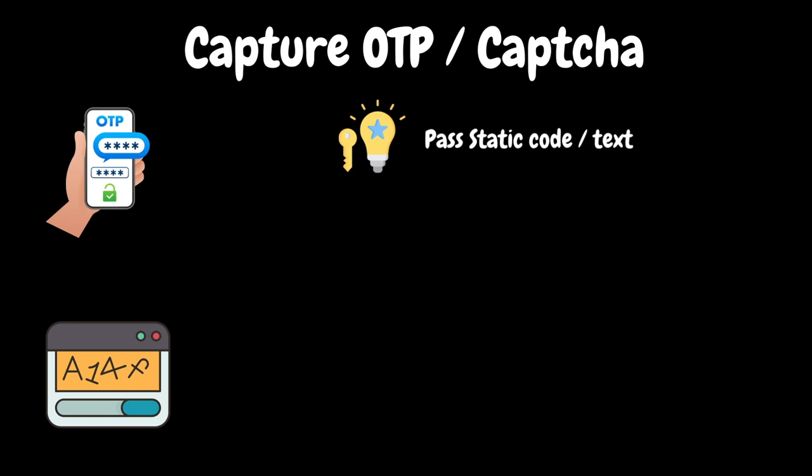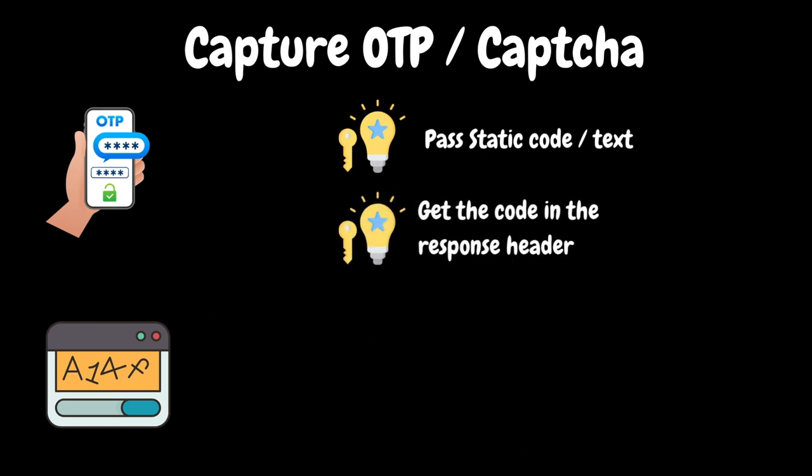We have to implement this in production. In this approach, we have to handle some functionalities — OTP code validation, generation — and we bypass this in the application. This is kind of a risk. Because in this project we can test the application, and the development team can include the OTP code in the response header.